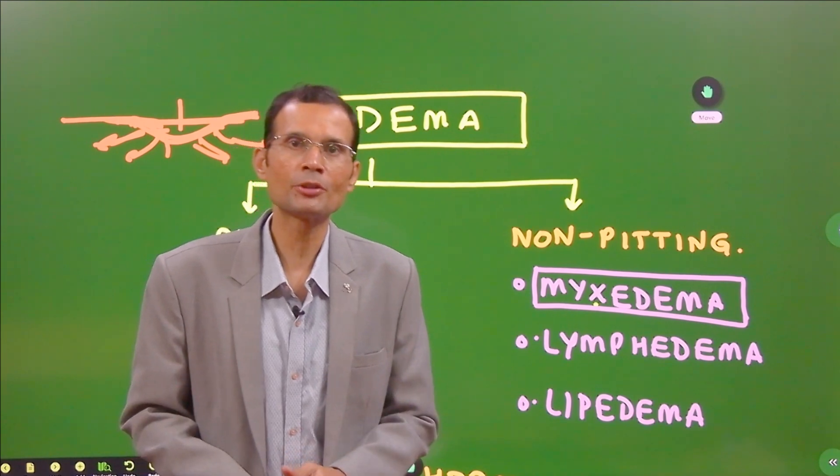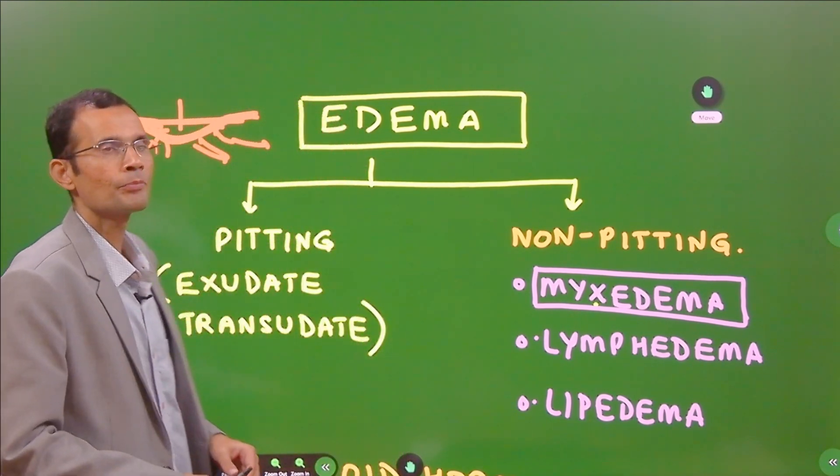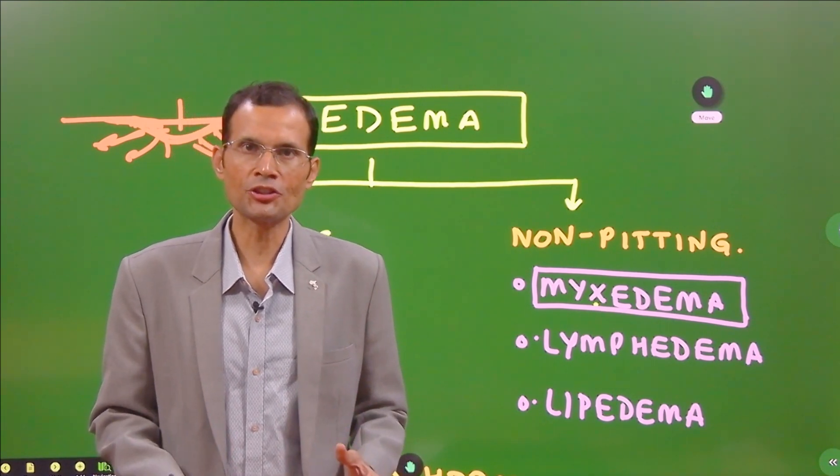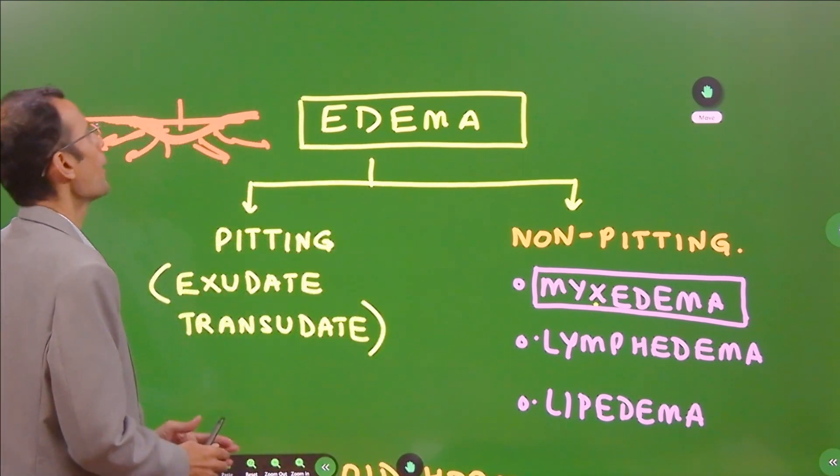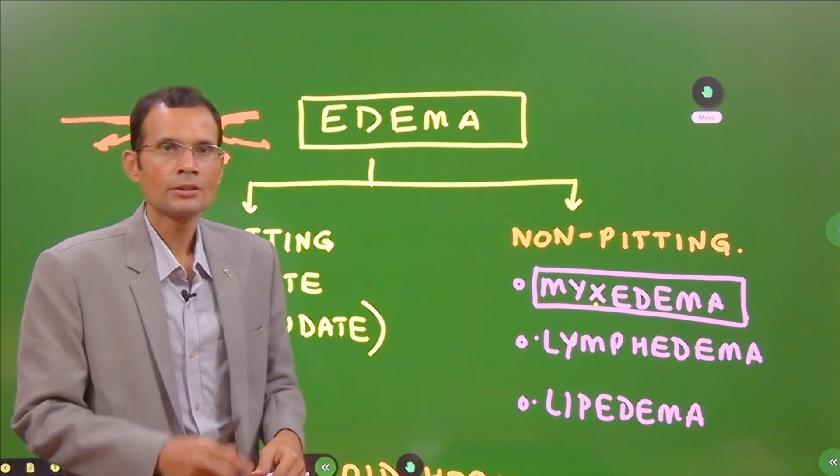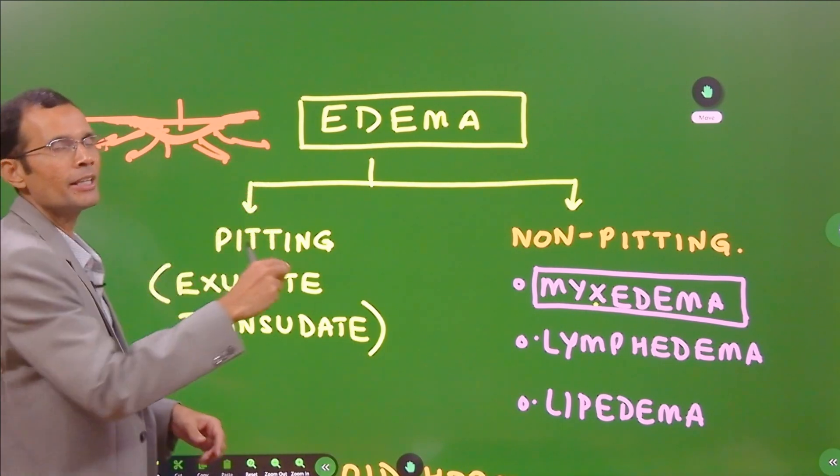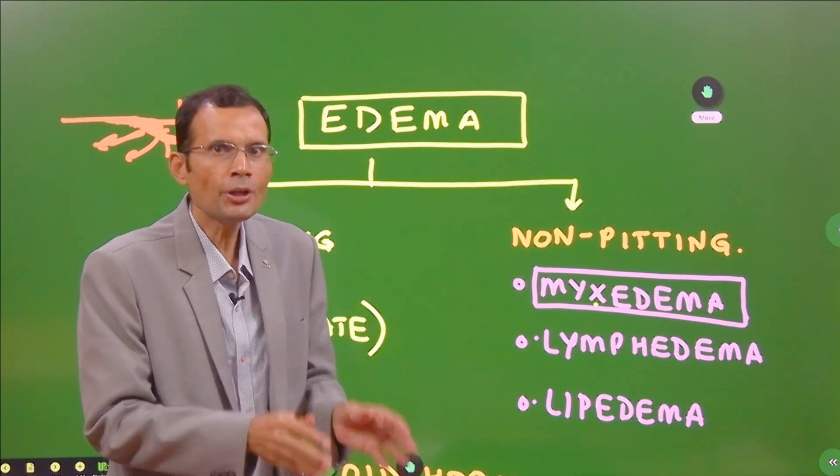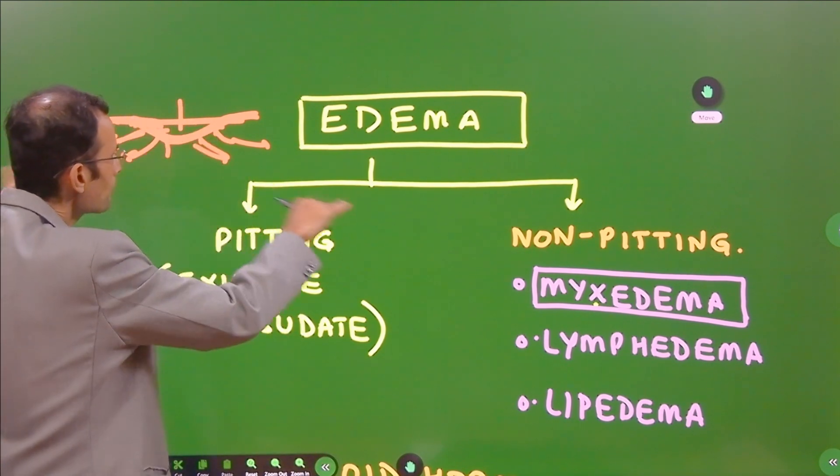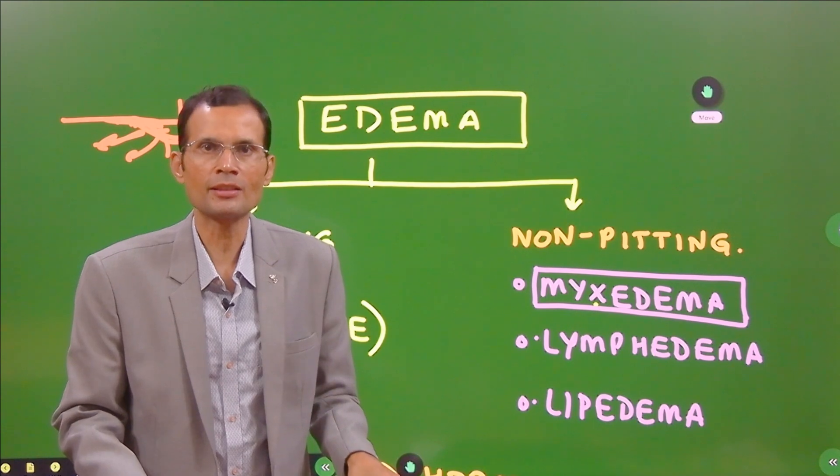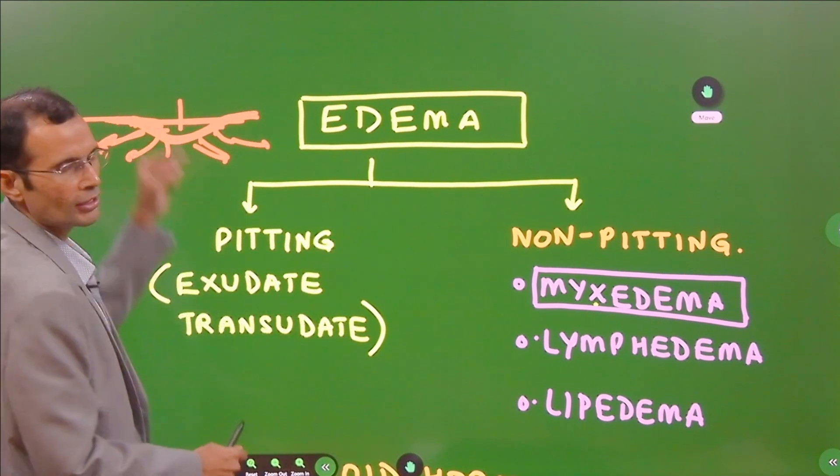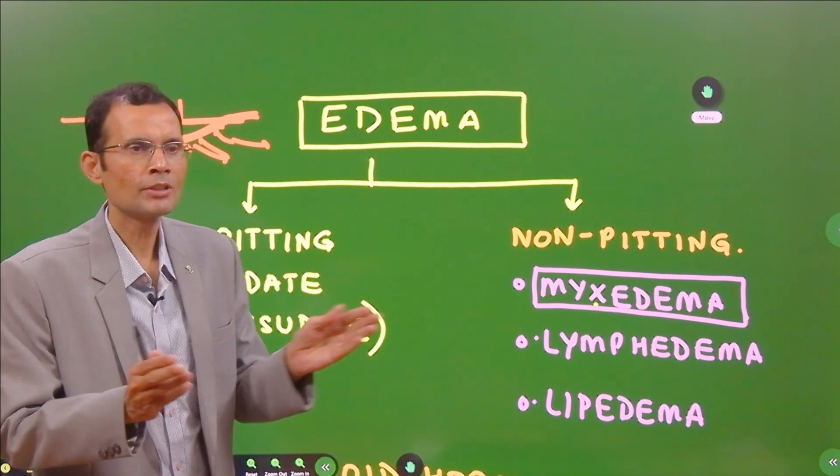Let's understand the difference between the two. Pitting type of edema: when there is excess fluid accumulated in the interstitium and you apply pressure on the edematous part, there is a pit formed in that area temporarily. The fluid that was accumulated just moves and is dispersed into the adjoining spaces, including the lymphatic channels. When you release the pressure, within some time the fluid will again come back.